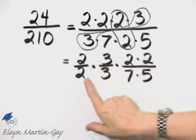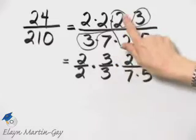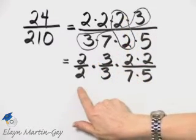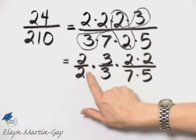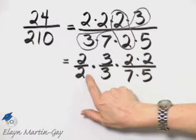Now, why am I writing it this way? Because 2 over 2, which is this common factor in the numerator and denominator, that simplifies to 1. Any number divided by itself, except 0 of course, simplifies to 1.